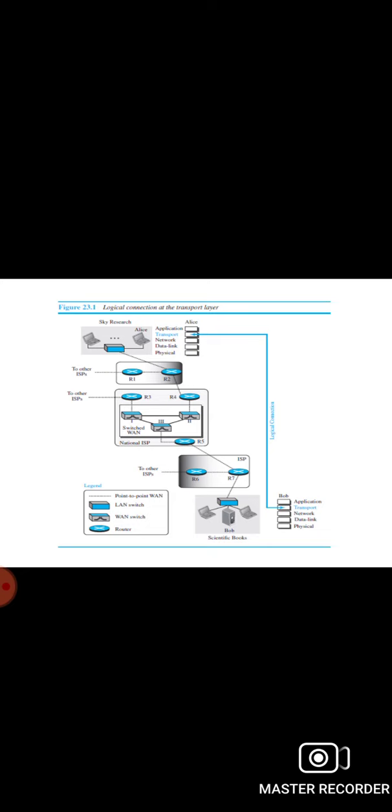At any moment, several processes may be running on the source host and several on the destination host. To complete the delivery, we need a mechanism to deliver data from one of these processes running on the source host to the corresponding process running on the destination host. The transport layer is responsible for process-to-process delivery — the delivery of a packet, part of a message, from one process to another. Two processes communicate in a client-server relationship.